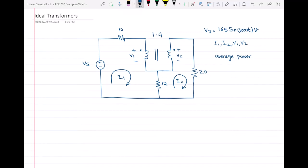Hi everyone. In this video I'm going to solve this circuit including an ideal transformer in order to find I1, I2, V1 and V2, and also I'm looking for the average power absorbed by each of these resistors that you can see in this circuit.